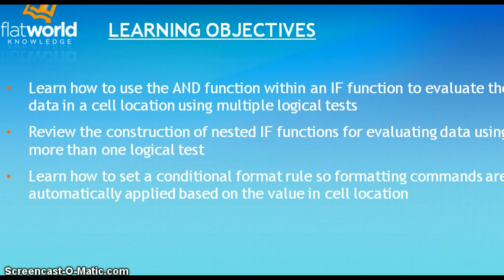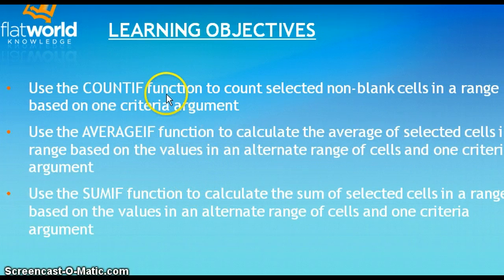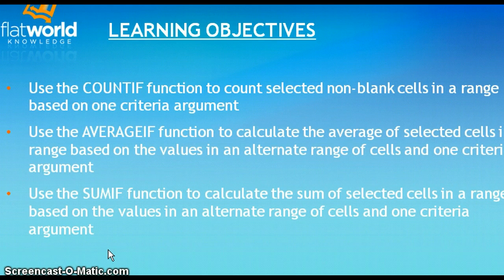We're going to set up some conditional rules and formatting commands that are automatically performed in various cell locations. We will also use the COUNTIF function, the AVERAGEIF function, and the SUMIF function, which are respectively used to count a number of cells within a range, average a number of cells within a range, and sum a number of cells in a range — given a conditional argument that will be either true or false.